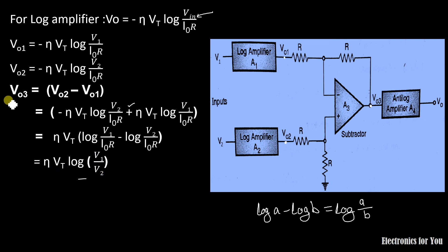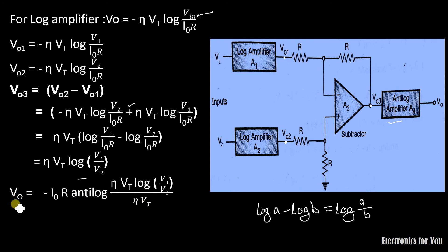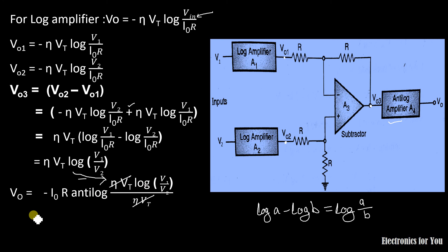This subtractor output is fed as input to the antilog amplifier. Using the antilog amplifier equation, the output V0 = −I0·R · antilog(η·Vt · log(V1/V2) / η·Vt). The η·Vt terms cancel, and antilog of log also cancels, giving the final output voltage for the divider circuit as V0 = −I0·R · (V1/V2).